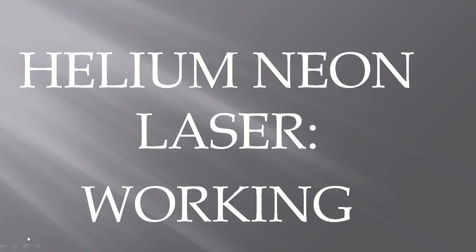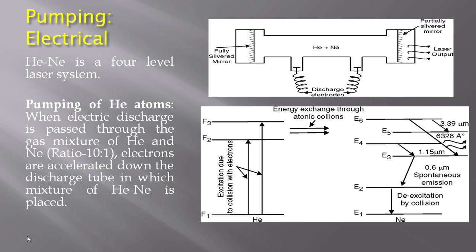Hello friends, today I will discuss Helium-Neon laser working. The pumping method is electrical. Helium-Neon is a four-level laser system. This is a construction diagram of the Helium-Neon laser, which I have already discussed in my earlier video lecture. First of all, with the help of the pumping source, pumping of Helium atoms occurs.